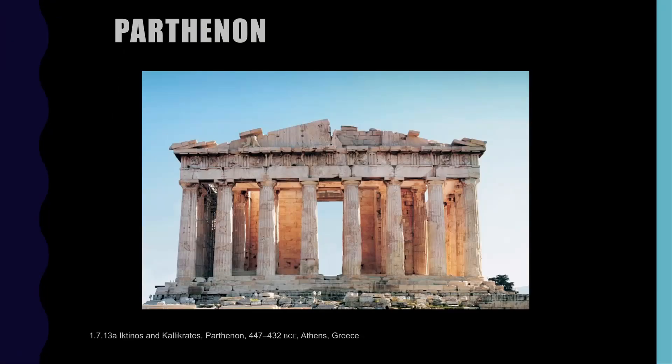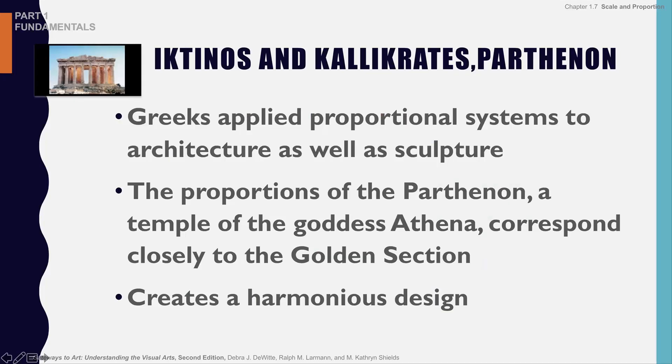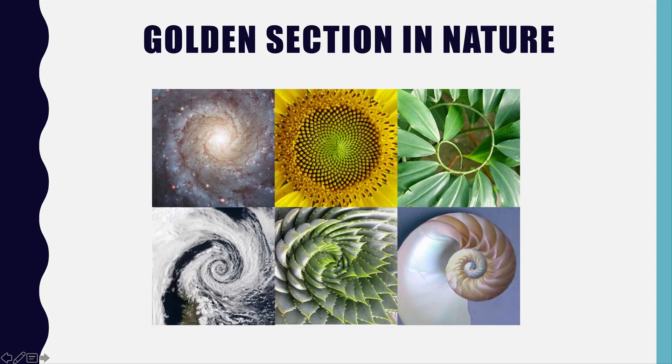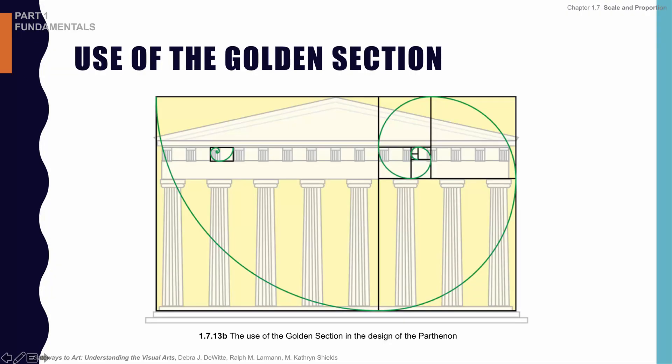The Parthenon in Athens is also an example of the golden section in architecture. The overall width and height of the building reflect the golden section ratio, and even the small friezes at the very top of the Parthenon share that same proportion. The Greeks intentionally used this ratio because they wanted all of their buildings to reflect stability.